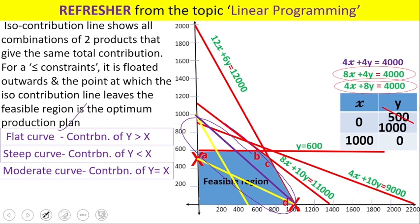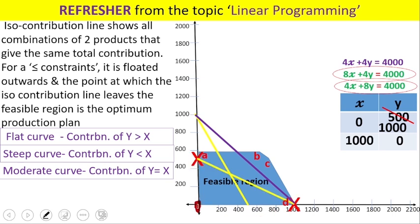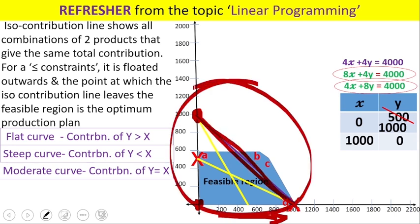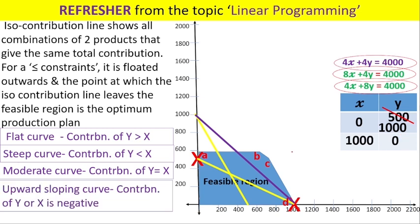Notice that all three curves — flat, steep, and moderate — are downward sloping. This means that as X increases, Y reduces. For the first curve, when x = 0 then y = 500, and as X increases Y falls. The same pattern holds for the second and third curves. All three iso-contribution line shapes are downward sloping curves.